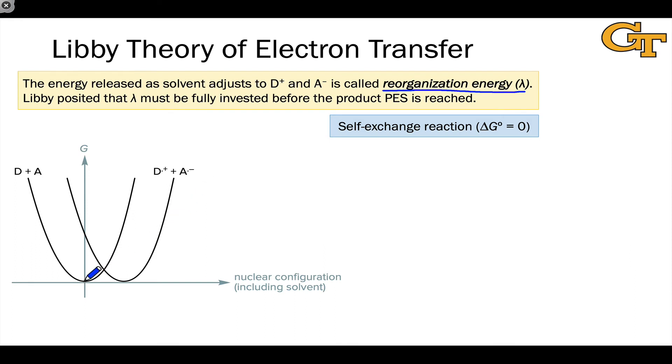What that looks like on this diagram is we start in the equilibrium situation of the reactants and complete inner sphere reorganization must happen without the solvent moving a muscle before we reach the D dot plus and A dot minus potential energy surface and head down to products.